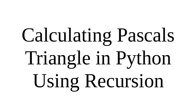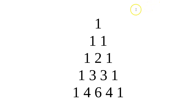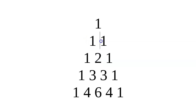Let's look at how to calculate Pascal's triangle in Python using recursion. First of all, we have to figure out what Pascal's triangle is. Here is a picture of the first few rows. Both the right and left sides are made up of ones, and each number that's not a one is made up of the two numbers above it added together — for example, the number two is made up of the two ones above it.